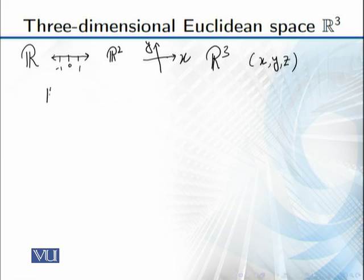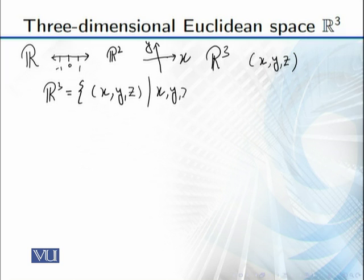We write R³ as the set which contains all triples (x, y, z) where x, y, and z belong to the real numbers. For example, (1, 3, 2) is an element of R³. The elements of this set are in ordered triple form and all entries are real numbers.